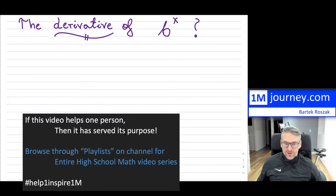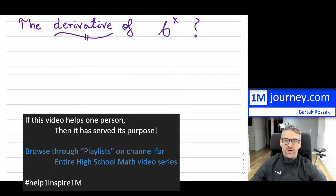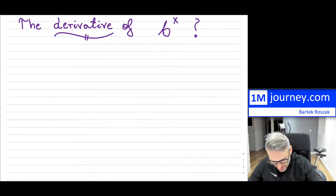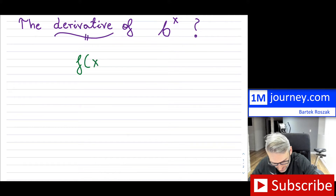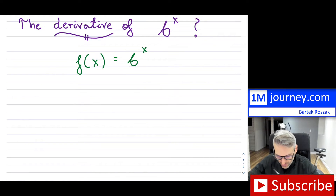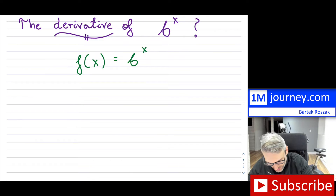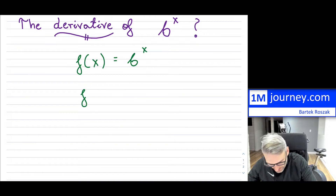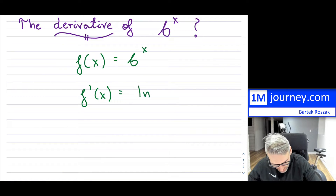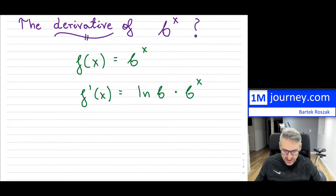The derivative of a function where we have an exponential, b to some x, where b is just the base. Our function is this. We want to show that if we take the derivative of this particular function, it will equal ln of b multiplied by the function back — b to the x. That's the goal.